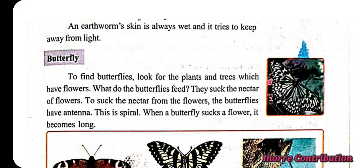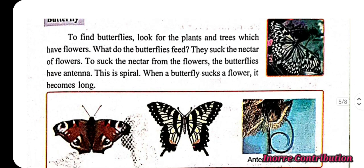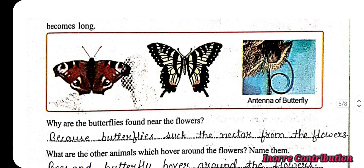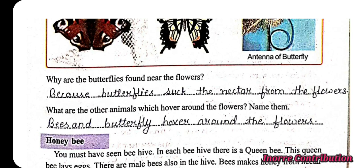To suck nectar from the flowers, butterflies have an antenna. This is spiral-shaped. When a butterfly sucks from a flower, it becomes long. Why are butterflies found near flowers? Because butterflies suck the nectar from the flowers.